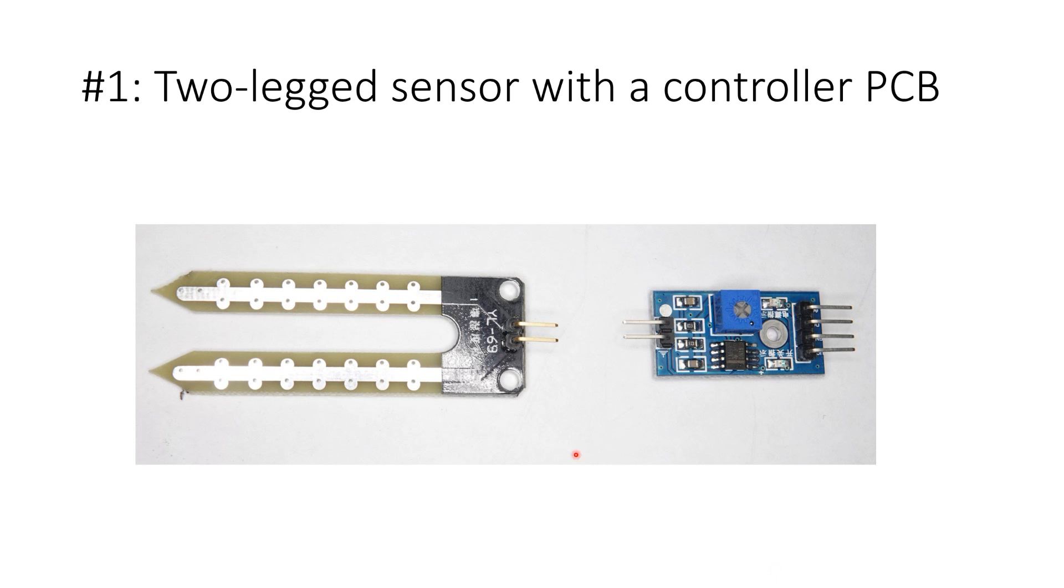A two-legged sensor with a separate small controller PCB. It has two pins on the sensor PCB and four pins to connect it to a microcontroller. It provides a digital and an analog output. The digital output can be adjusted by a trimmer. There are conducting tracks exposed on both legs of the sensor.